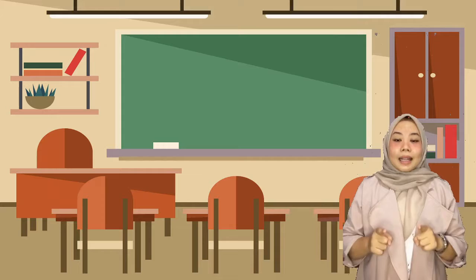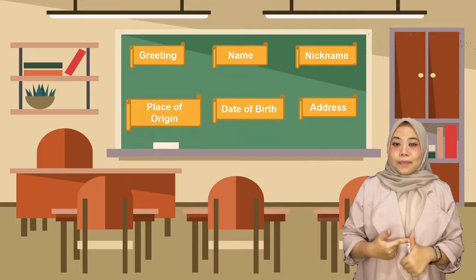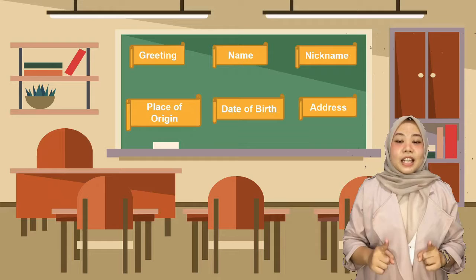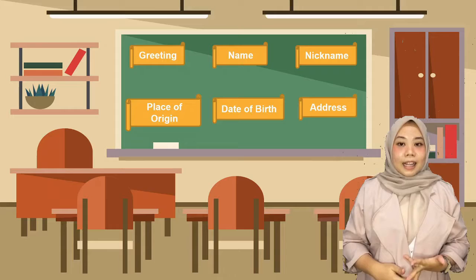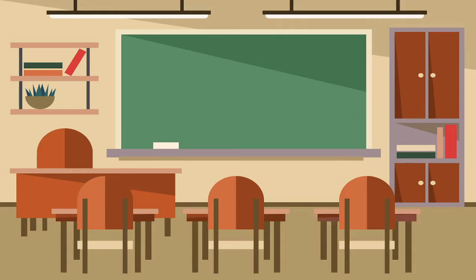Greetings is the first step to begin our introduction. Then follow your name, your nickname, place of origin, date of birth, and address. Jadi, hal pertama yang dilakukan ketika memulai perkenalan yaitu memberikan sapaan kepada teman kita. Selanjutnya menyebutkan nama, nama panggilan, kota asal, lalu tanggal lahir, dan alamat kita.